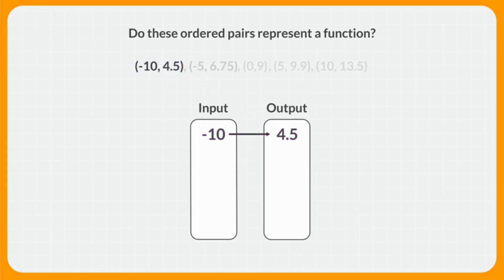Next, we'll move to this point. There's an input of negative 5 and an output of 6 and 75 hundredths. So far, we have two different inputs on our map. At this point, does this map show a function? The two inputs each have just one output, so right now our map is showing a function.